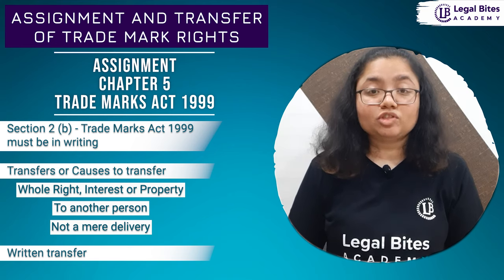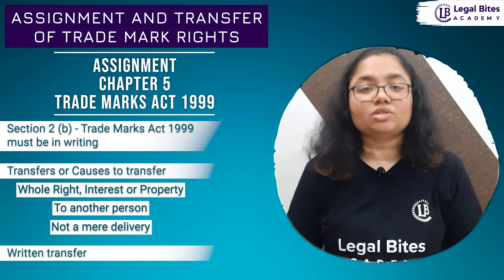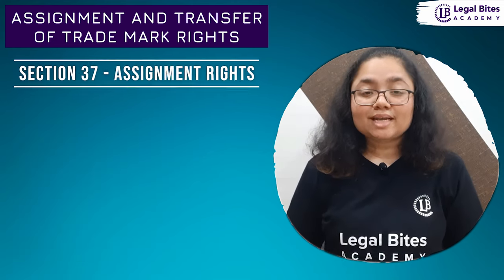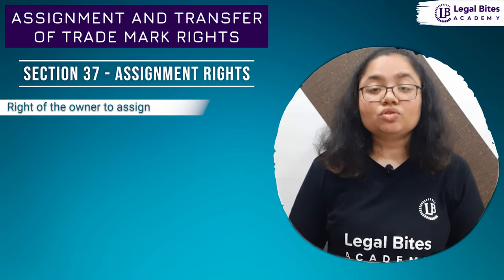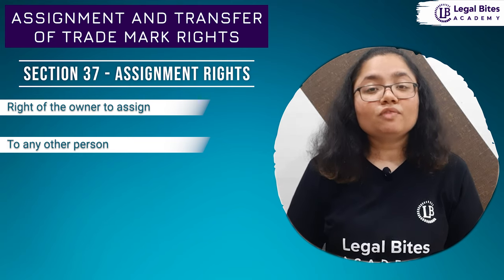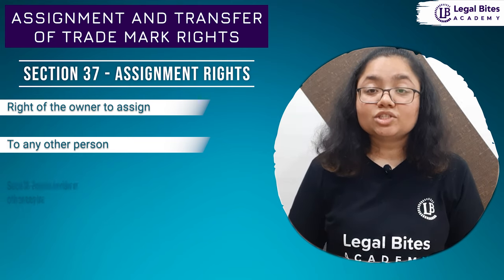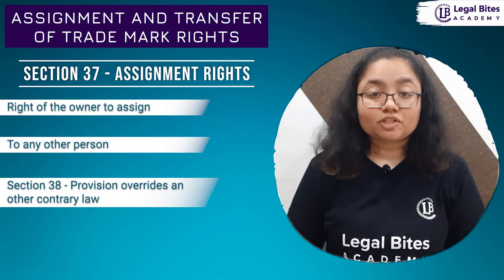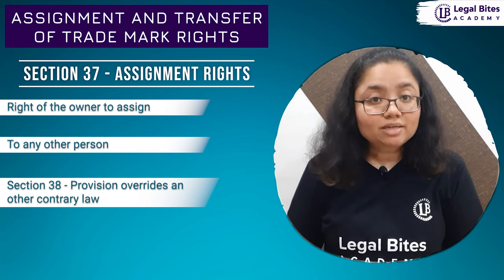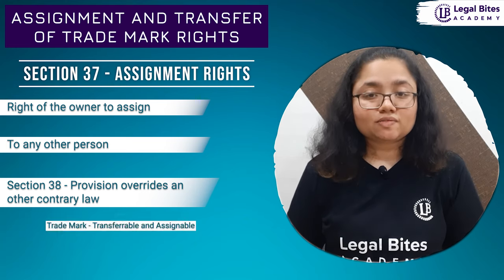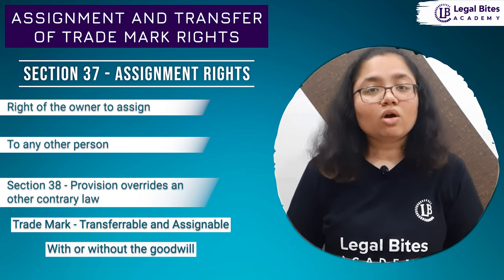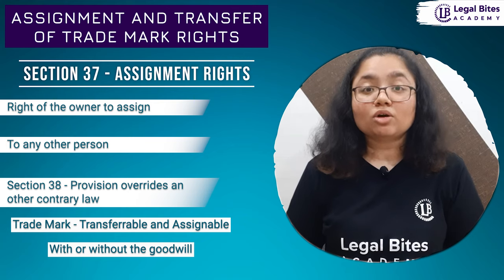Chapter 5 of the Trademarks Act 1999 has the provisions related to the assignment and transfer of trademark rights in India. Section 37 of the Act gives the right to the owner of the trademark to assign his rights to any other person in return of consideration. Section 38 contains a non-obstante clause which means that this provision overrides any other contrary law and that the trademark is a transferable and assignable right. It may be with the goodwill or without the goodwill of the business of the trademark owner.